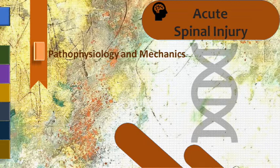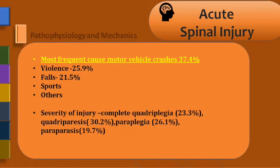What is the pathophysiology and mechanics of spinal injury? The most common etiology is road traffic accident, followed by violence, falls, and sports injury. If we talk about severity, the most common is quadriplegia at 30%, followed by paraplegia, which means complete motor weakness, and followed by incomplete quadriplegia.